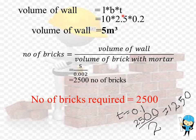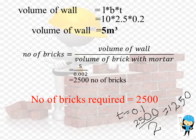If we take the thickness as 0.1 meter for the wall, we should divide the number of bricks by 2. Therefore we get 1250 bricks. The number of bricks required to build a wall with a thickness of 0.1 meter is 1250.